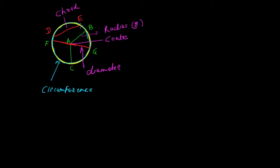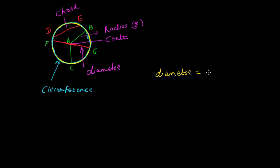Now, all these — diameter, radius, and circumference — are related to each other. If you know two of them, you can calculate the third using a formula. Let us understand the relation between all these terms, starting with diameter. As we know, diameter is equal to 2 times the radius.